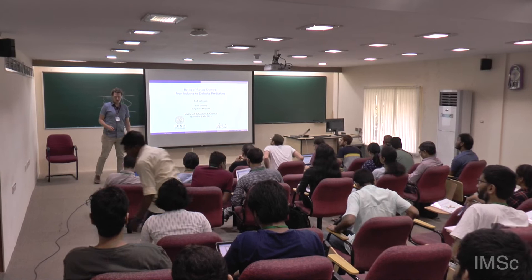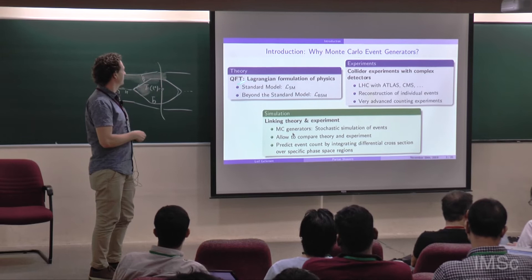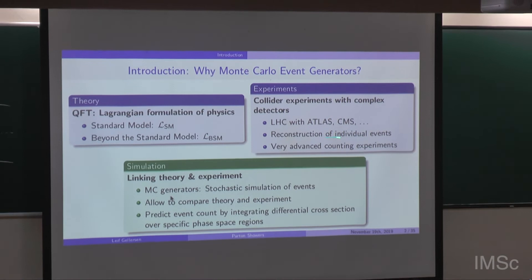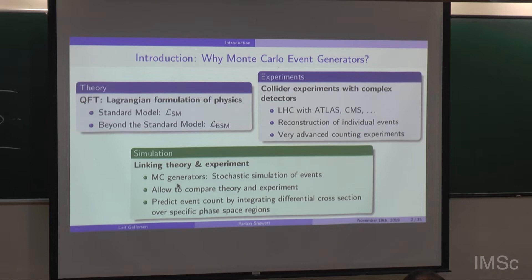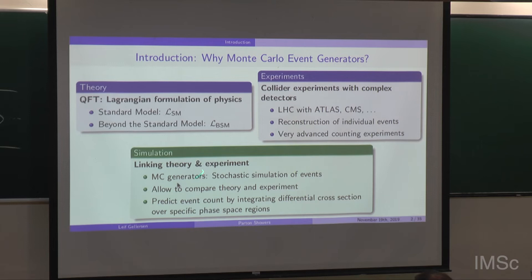I'll be talking about the basics of parton showers, and let me start with a connection to the bigger picture. Why do we need Monte Carlo event generators? On one side we have the theory described in terms of QFT and Lagrangians, but on the other side we have experiments — collider experiments with very complex detectors like the LHC with ATLAS and CMS — that reconstruct individual events. Monte Carlo event generators allow us to simulate the theory to a level where we can compare with experiments, doing a stochastic simulation of the full event.